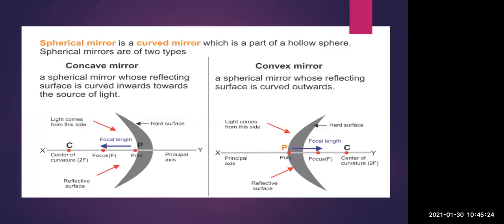Now let's look at spherical mirrors. A spherical mirror is a curved mirror which is a part of a hollow sphere. Spherical mirrors are of two types: concave mirrors and convex mirrors. A concave mirror is a spherical mirror whose reflecting surface is curved inwards towards the source of light.